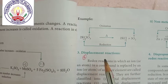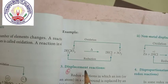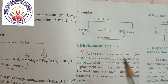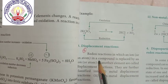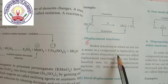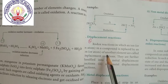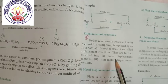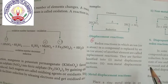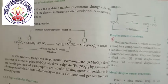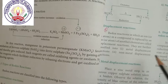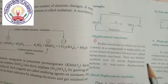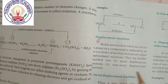Next is displacement reactions. As you know from 10th level chemical reactions, there is a displacement reaction in which an ion in a compound is replaced by an ion of another element. They are further classified into metal displacement reactions and non-metal displacement reactions. Non-metals such as silicon, carbon, and sulfur are involved in non-metal displacement reactions.